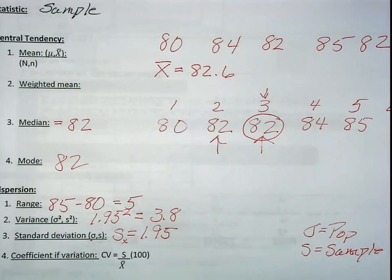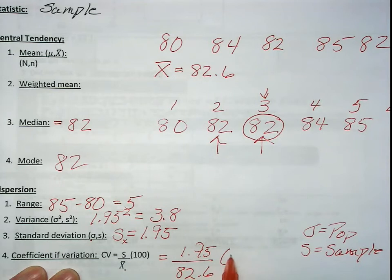The last measure of dispersion is coefficient of variance. This is not in your textbook, it is in my PowerPoint presentation, but it's something that typical in the business industry you use. You normally apply it to compare two sets of data. In my example, I'm only going to use one. If I give it to you on the exam, you will only compare one. It's standard deviation divided by the mean times 100. So in this example, it's 1.95 divided by the mean, which is 82.6 times 100, and our CV is 2.36.